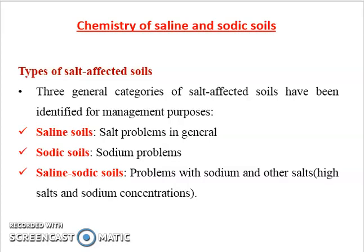Due to arid conditions, saline and sodic soils are usually found in our soil. The chemistry of saline and sodic soil involves three types of salt-affected soil: saline soil (salt problem in general), sodic soil (sodium problem), and saline-sodic soil (problem with both sodium and other salts), which has high salt and high sodium concentration.